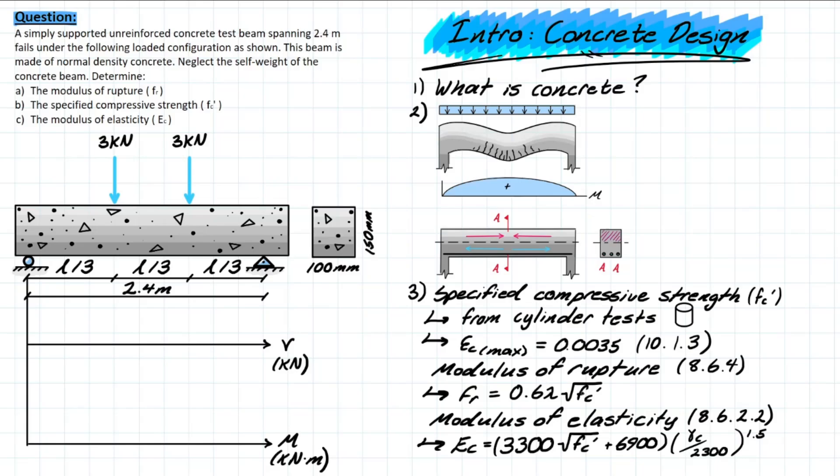Since we talked about fc prime already, we know that this tensile strength is going to be based or interpolated on that solved for or tested compressive strength value, and that gives you your final formula for rupture strength.